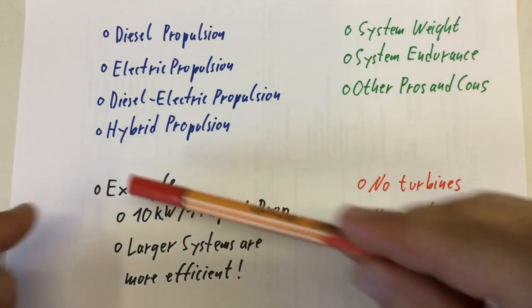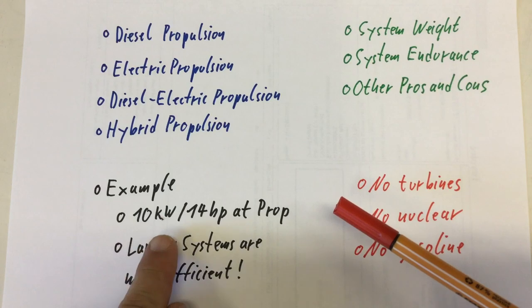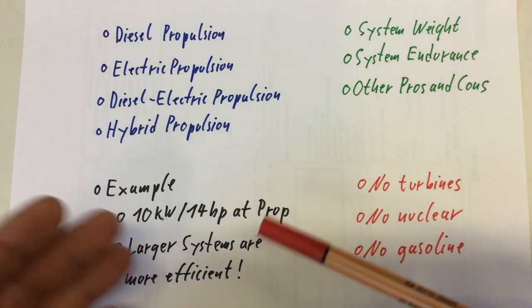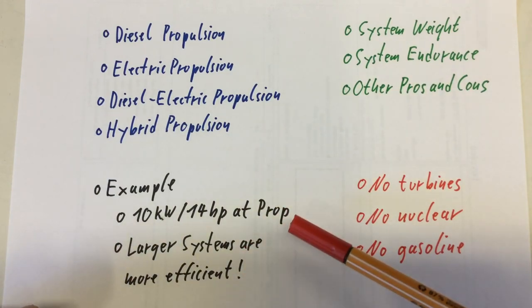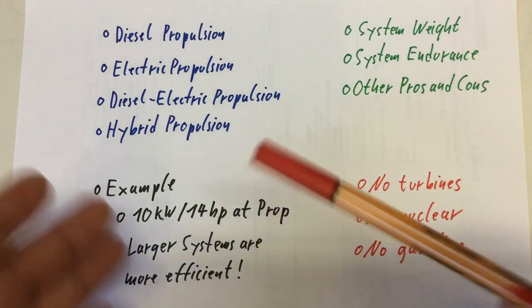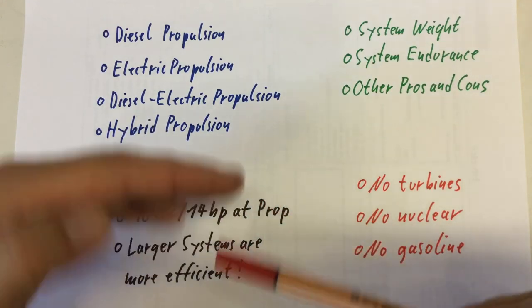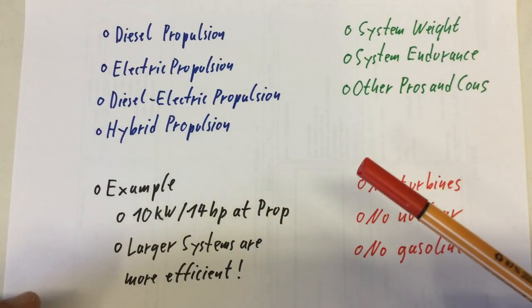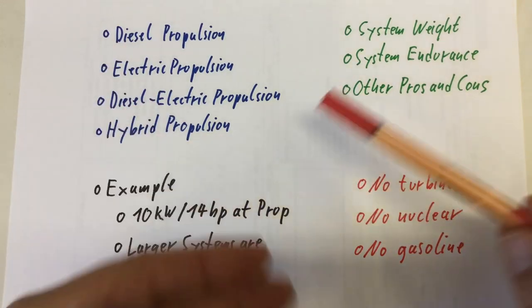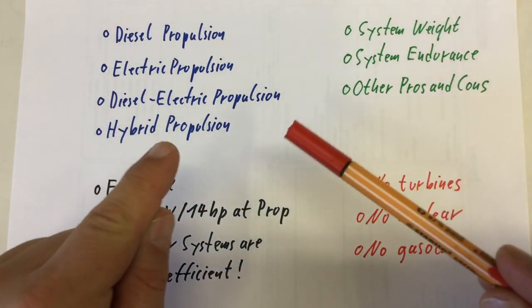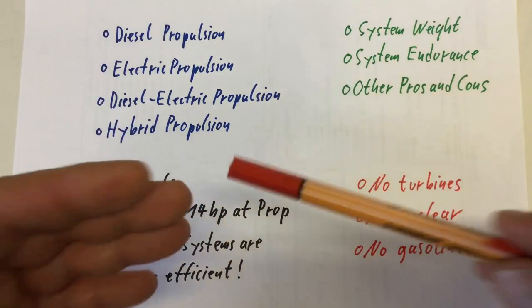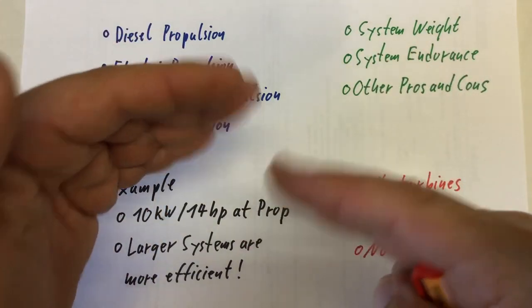I want to do that using an example where we have 10 kilowatts or 14 horsepower at the propellers, a rather small propulsion system. Please note, larger propulsion systems, for example the two-story high 12-cylinder two-stroke diesel engine gulping heavy oil in a container freighter, is much more efficient than a 14 horsepower two-cylinder four-stroke micro diesel engine.